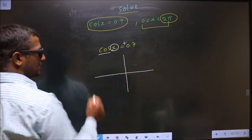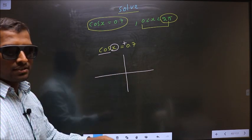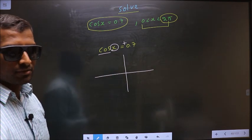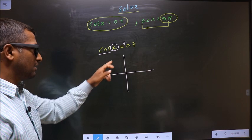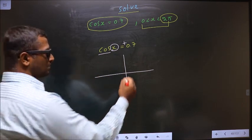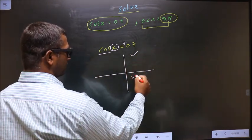Now check: in what quadrants is cos positive? It's all silver tea cups. So cos is positive in the first and fourth quadrants.